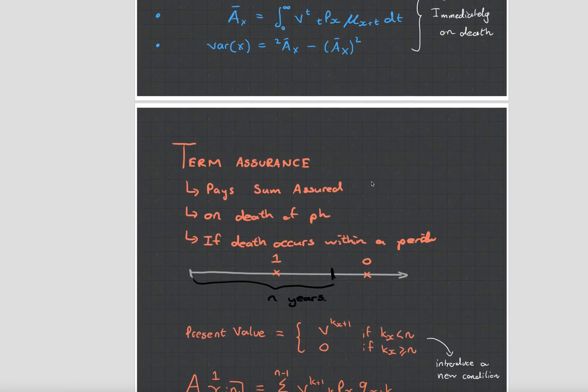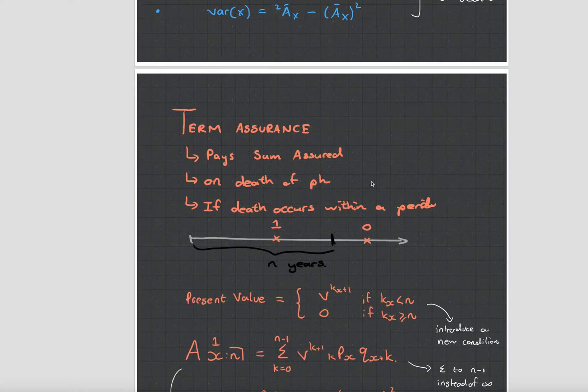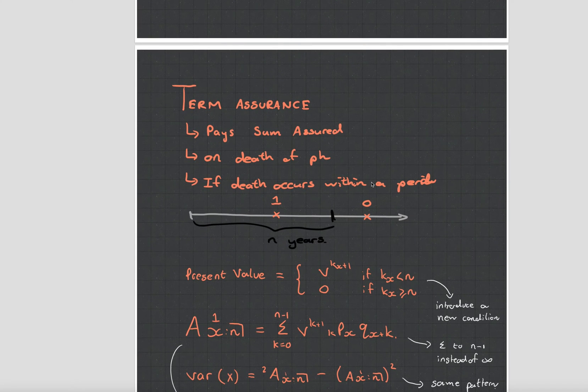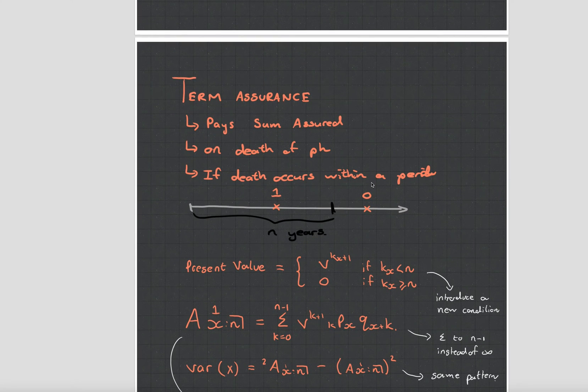Okay then you get your term assurance. Term assurance what this does is it pays out if someone dies but only if that person dies within a certain time period. So the whole life if you took it out on yourself it would pay out an amount whenever you died. Term assurance with a term of say 10 years will only pay out if you die within 10 years. If you survive to 11 years and then die you get nothing.